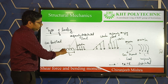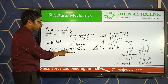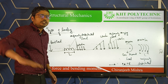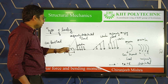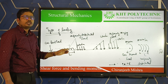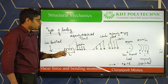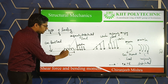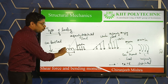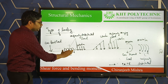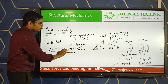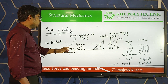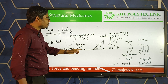Second type is uniformly distributed load (UDL). The load is uniformly distributed and denoted by, for example, 5 kN per meter. That means in each meter distance, the load acting is 5 kN. If the span is 3 meters, the total load is 5 × 3 = 15 kN. This is how UDL is denoted.